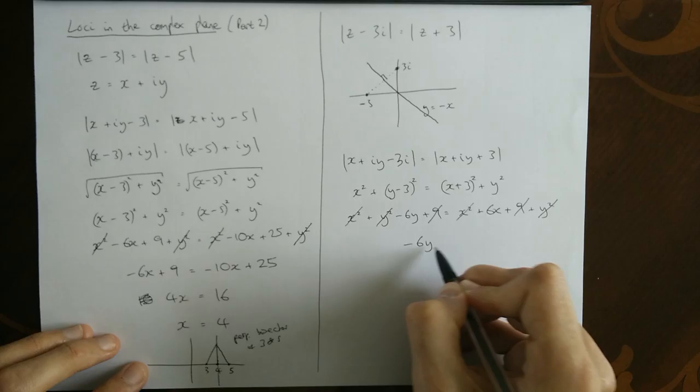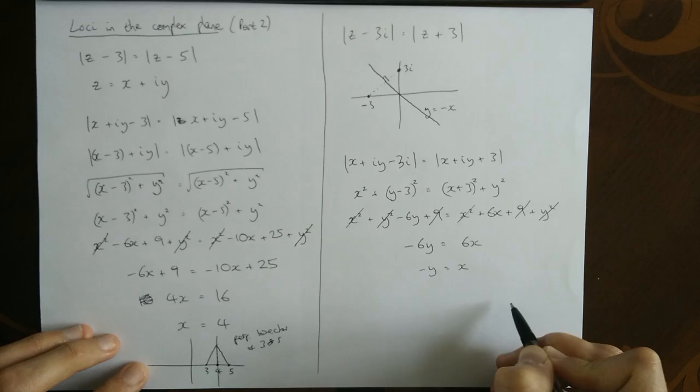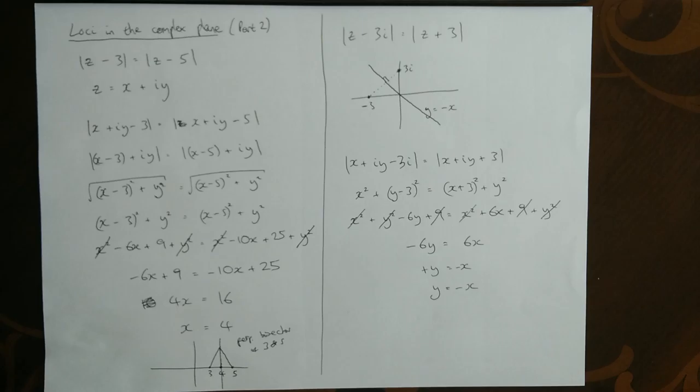Minus 6y is equal to 6x. If I divide through by 6, we get that. And if I just change the signs, as in times by minus 1 on both sides, I should get what I said I'd get at the beginning, which is always nice. That is what we wanted. Y is equal to minus x.